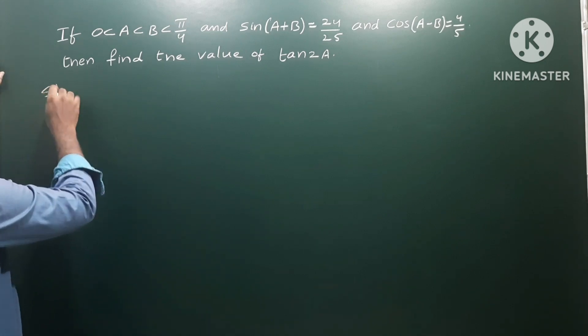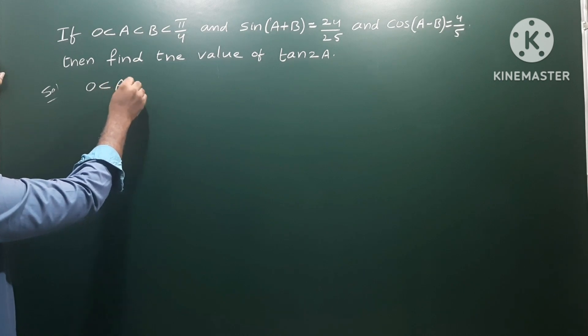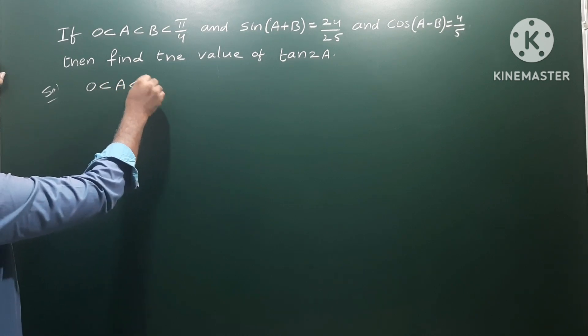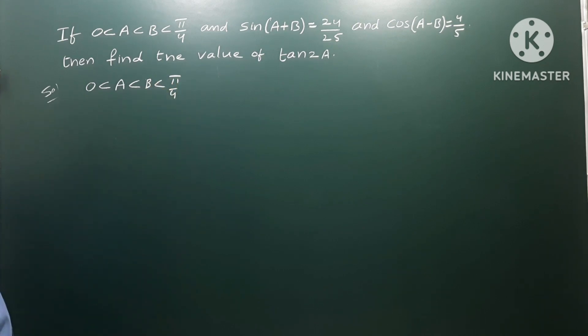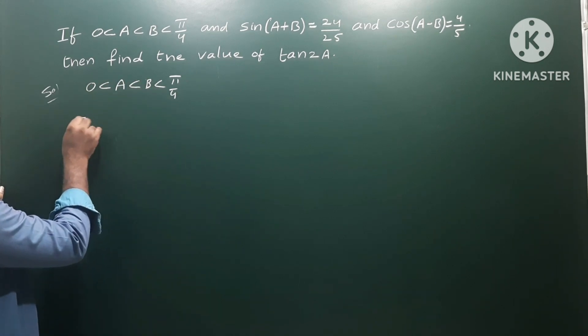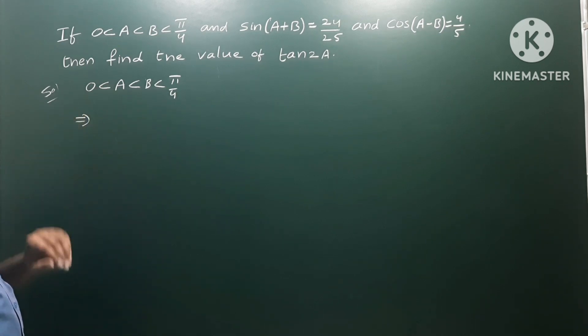π/4 means 45 degrees, so the meaning is that A and B are both between 0 and 45 degrees. These two angles lie between 0 and 45, so that means they belong to the first quadrant.